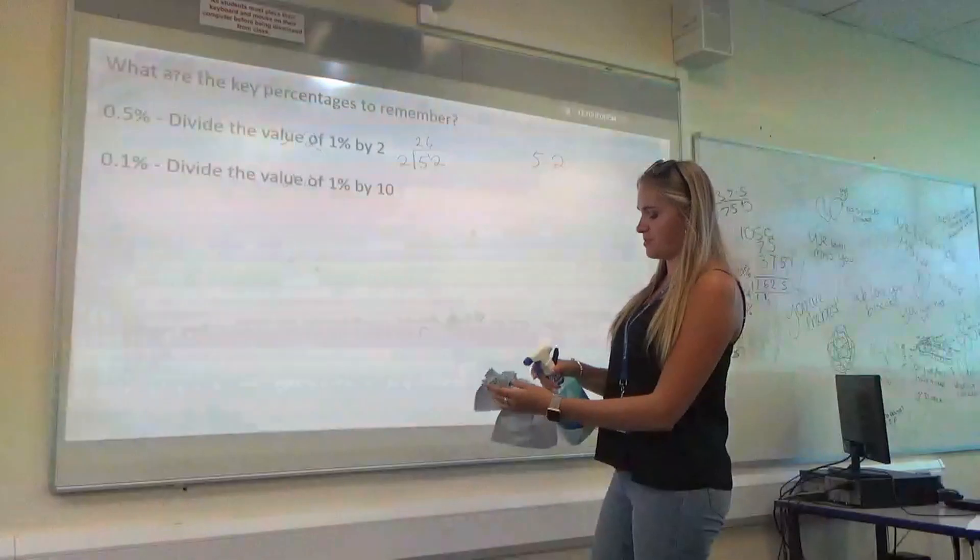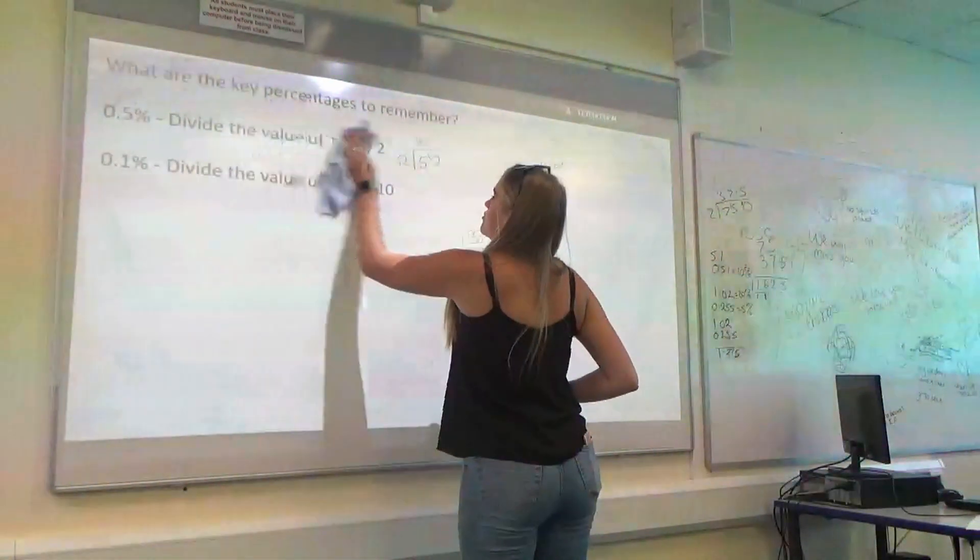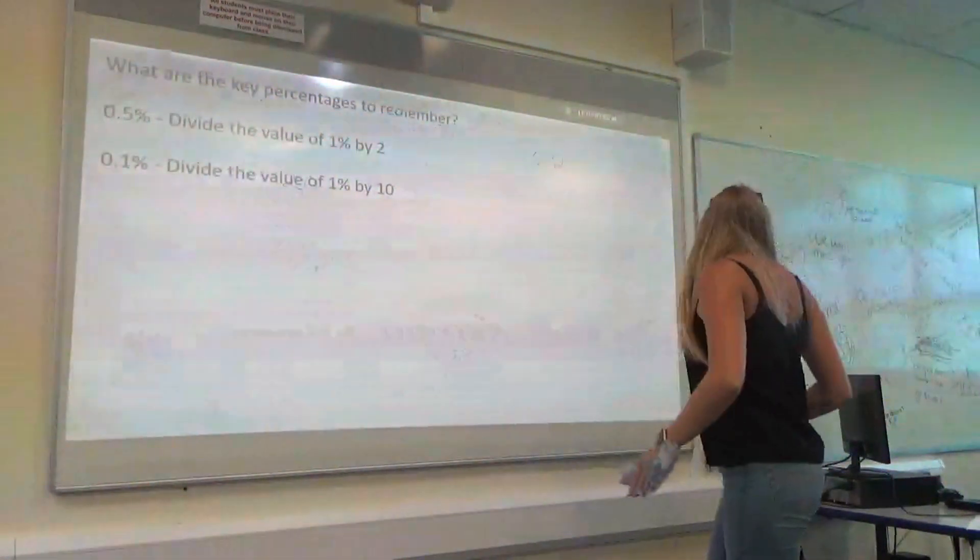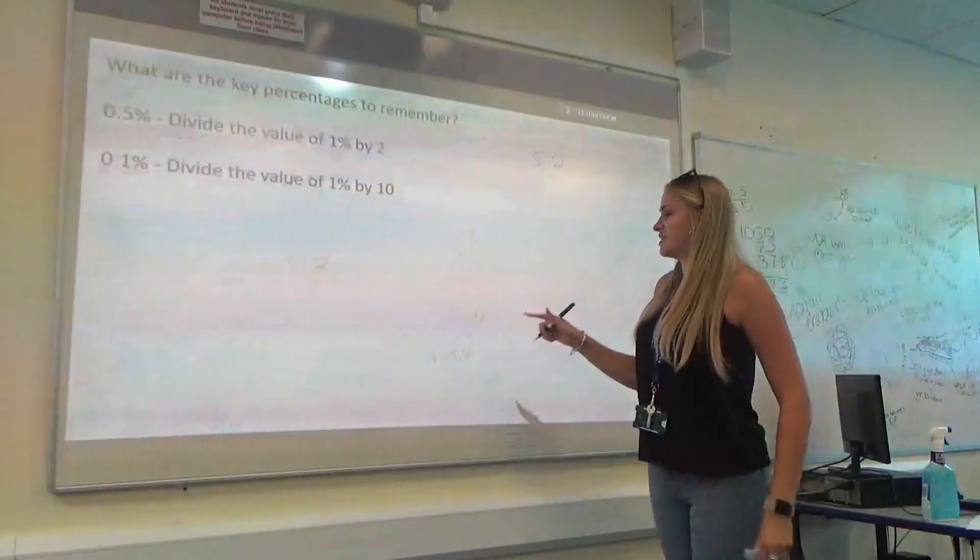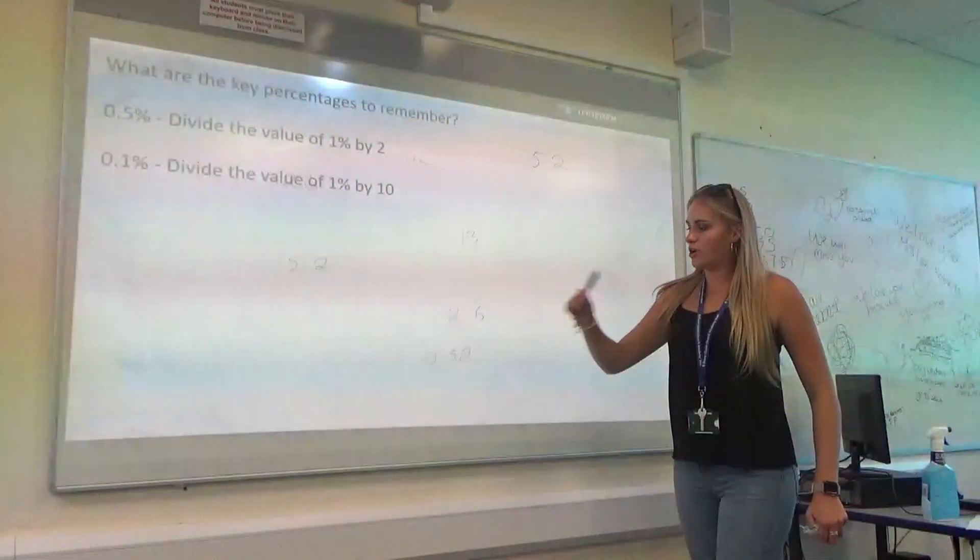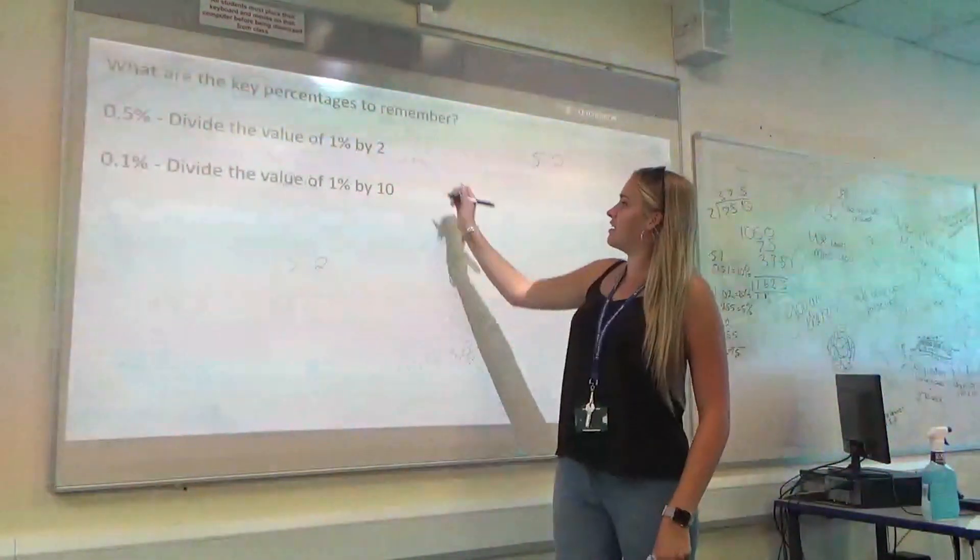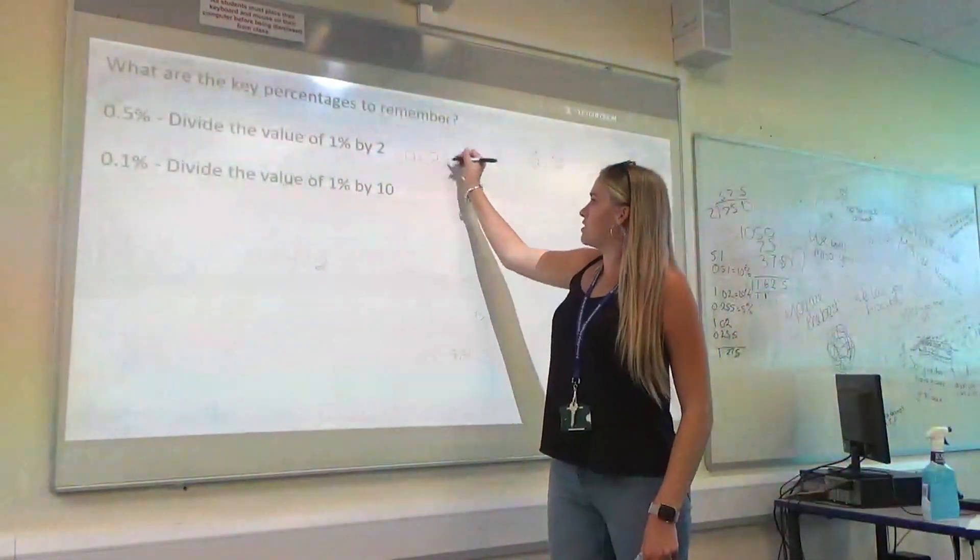So, 0.5%. From our value before, when we got 5, we had 5%, which was 2.6. So, to get 0.5%, we're going to divide that by 10 again. So, we get 0.26.